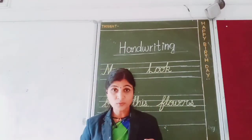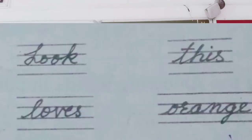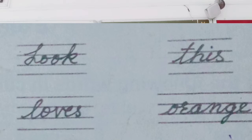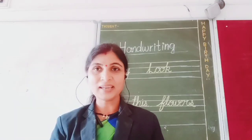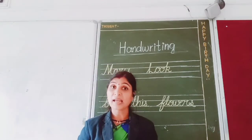Pause the video and write those five words five times each in your notebook. More words: P-I-N-K — pink; L-O-V-E-S — loves; O-R-A-N-G-E — orange. These are the words which you have to write in your notebook, in your fair copy.